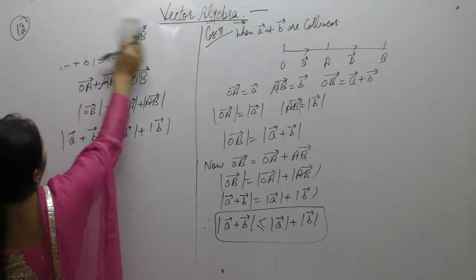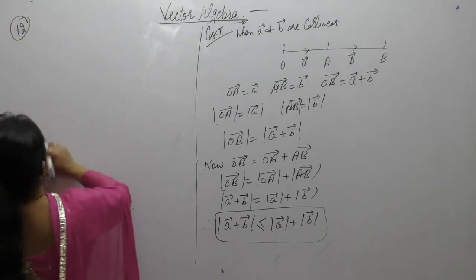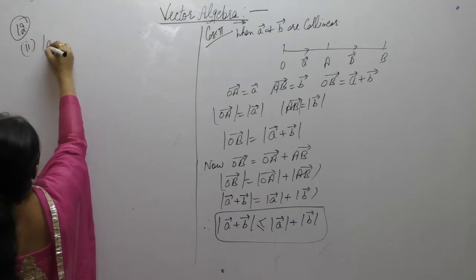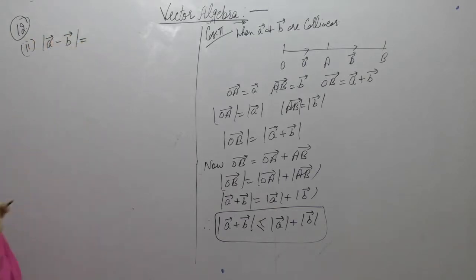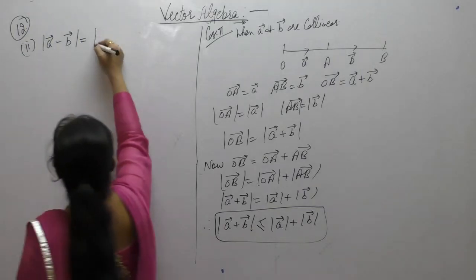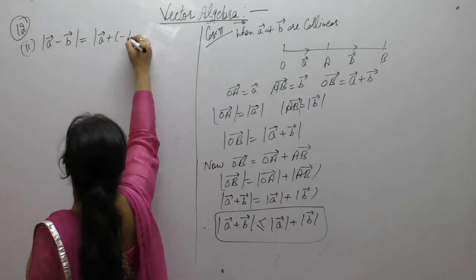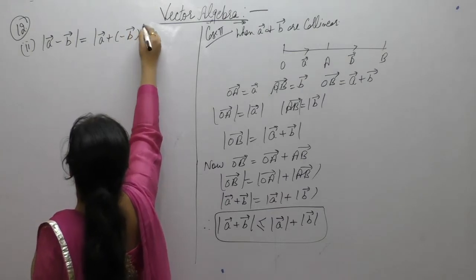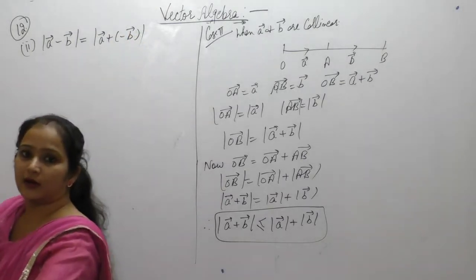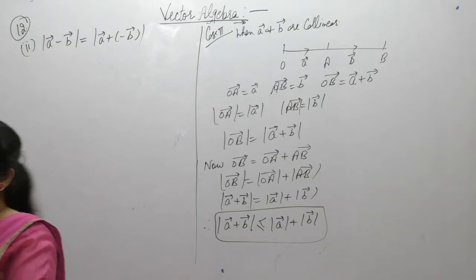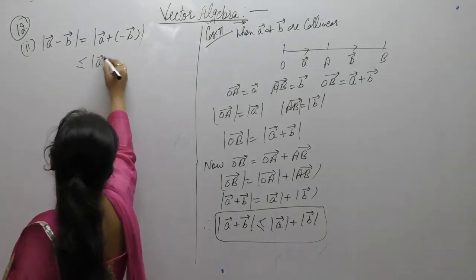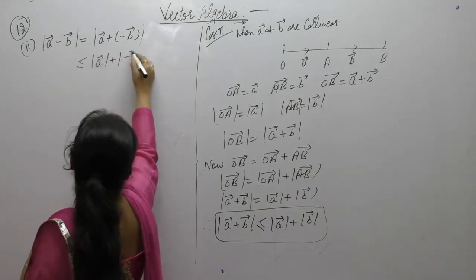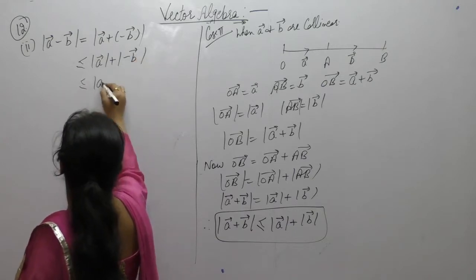Now for the second part, A vector minus B vector. We can write it as A vector plus negative of B vector. And magnitude of A vector plus B vector is less than or equal to magnitude of A plus magnitude of B.